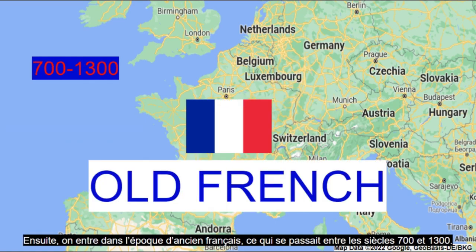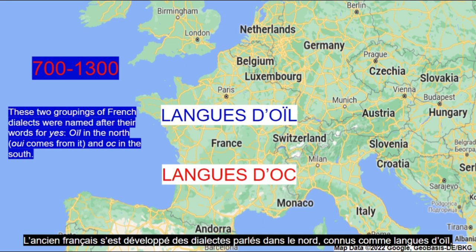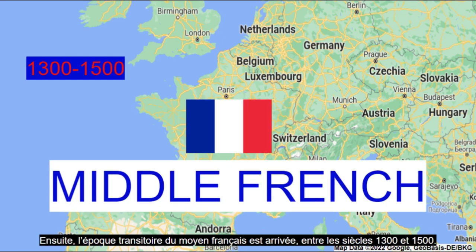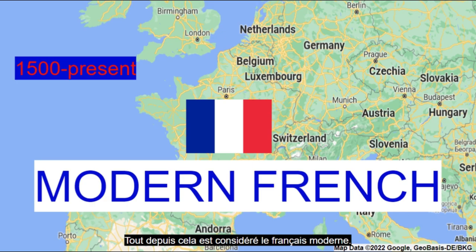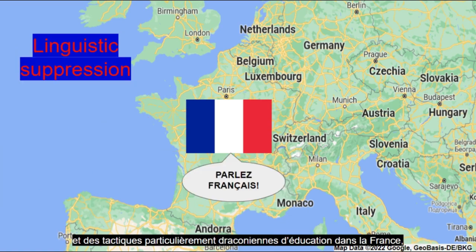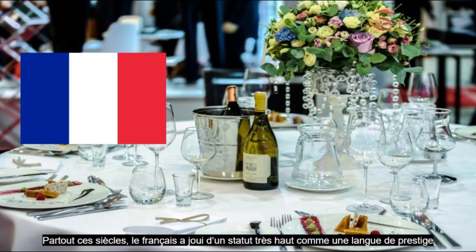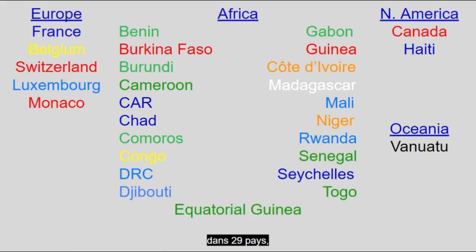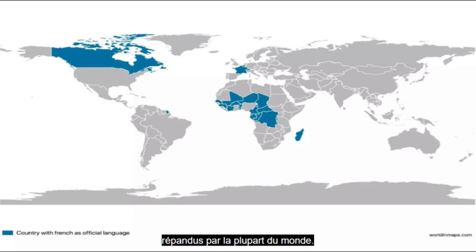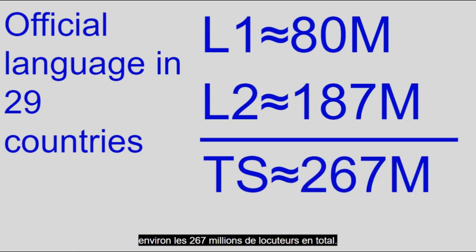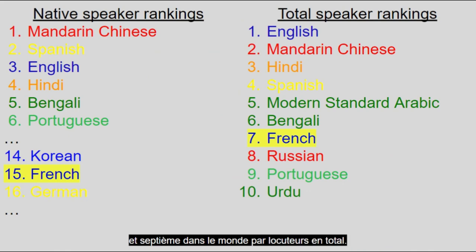Afterwards, we enter the Old French period, which was between the 700s and the 1300s. Old French developed from the dialect spoken in the north, known as Langue d'oïl, as opposed to the Langue d'oc, spoken in southern France. Then came the transitional Middle French period, between the 1300s and 1500s. Everything since then is considered modern French. In that time period, the language got standardized to the Paris variety, and then spread through various means such as colonization overseas and particularly draconian education tactics within France in areas where minority languages are spoken. Throughout these centuries, French has enjoyed a very high status as a language of prestige and the international language of diplomacy. Today, French is an official language in 29 countries and 12 subnational entities spread throughout most of the world. It has about 80 million native speakers, with about 187 million L2 speakers, totaling approximately 267 million total speakers. French ranks 15th in the world for native speakers and 7th in the world for total speakers.